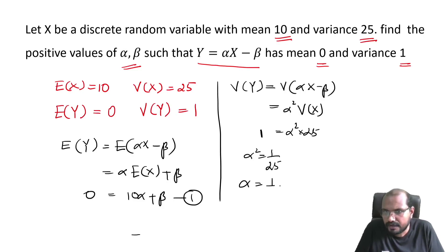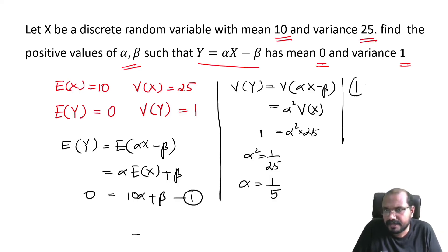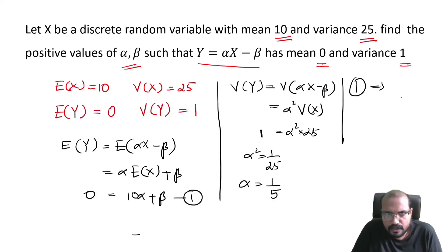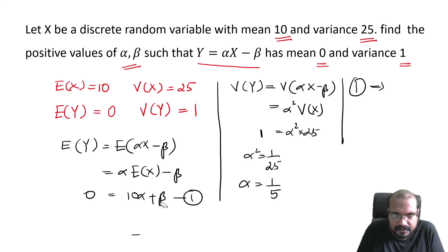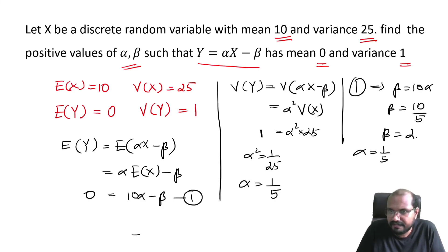Since alpha must be a positive value, alpha equals 1 by 5. Substituting into equation number 1, we get beta equals 2. So the solution is alpha equals 1/5 and beta equals 2.